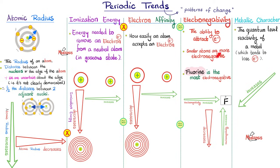On average, smaller atoms are more electronegative than large atoms. This makes sense because if you're small, there is less electron shielding — fewer electrons covering the nucleus — so it is easier to attract an electron from the outside world. Last, metallic character: it's the quantum-level reactivity of a metal, based on the tendency to lose electrons — which is the opposite of electronegativity. Since electronegativity goes up to the right and upward, metallic character has to be the opposite: it increases as you go down and to the left.